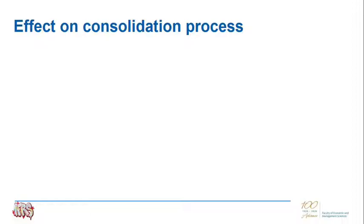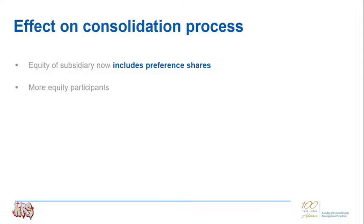Now that we have a better understanding of the nature and different classes of preference shares, let's talk about the effect on the consolidation process if the equity of the subsidiary now also includes preference shares. The moment that happens, you have more equity participants in the subsidiary. Up until this point, the equity participants in S were the ordinary shareholders. Now your equity participants in S will be the ordinary shareholders and the preference shareholders. We will follow the normal consolidation process, just adding on to what we've already been doing.